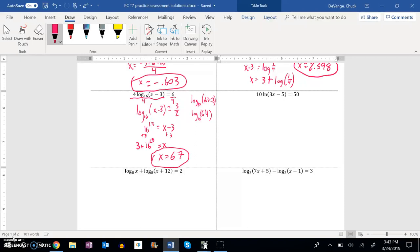So we have 10 times natural log of 3x minus 5 equals 50. So let's get that natural log all alone. Divide by 10.